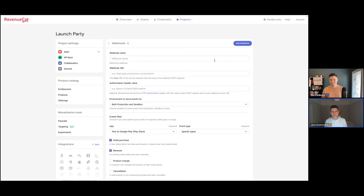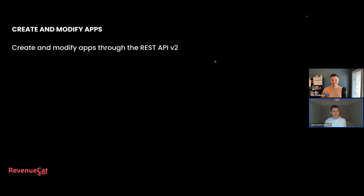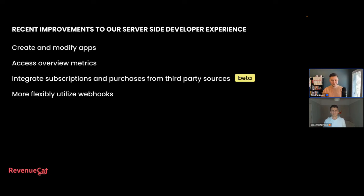That's it from my perspective. On the multiple webhooks in particular — one of the other cases we see all the time is that you might just have different teams or groups within your company that care about that data. A very common one would literally be: you have some production need for getting the webhooks to keep track of who should have entitlements — your backend team cares about that. Your data team might also want those webhooks for a totally different reason. Being able to manage those subscriptions separately saves a lot of heartache. Previously you could always add one endpoint and do the filtering and forwarding yourself, but it's obviously much easier to just have it with a few clicks on our dashboard and we do the filtering for you.